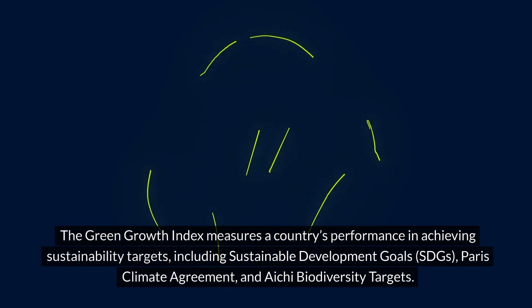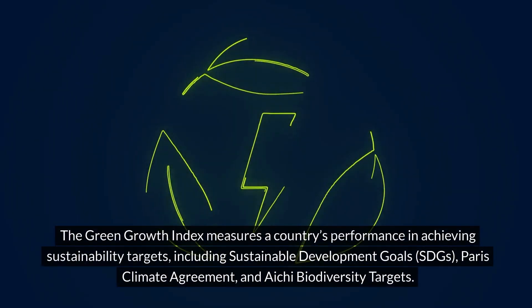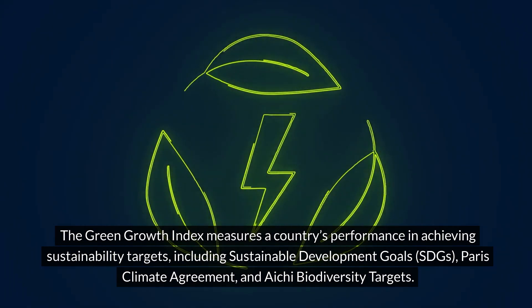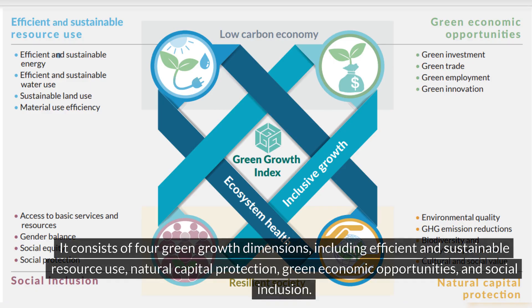The green growth index measures a country's performance in achieving sustainability targets, including Sustainable Development Goals (SDGs), Paris Climate Agreement, and ICI Biodiversity targets. It consists of four green growth dimensions: efficient and sustainable resource use, natural capital protection, green economic opportunities, and social inclusion.